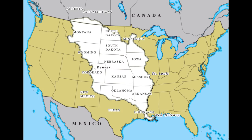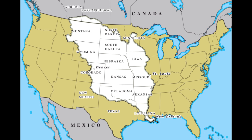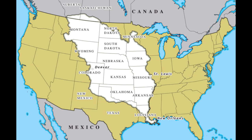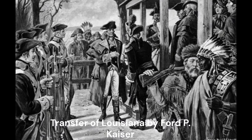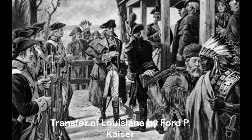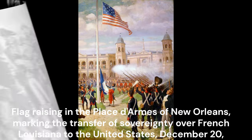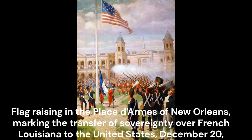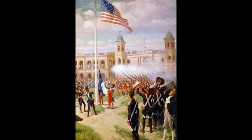As the 19th century dawned, the U.S. expanded westward with the Louisiana Purchase in 1803, doubling its size overnight. This era of manifest destiny saw pioneers, adventurers, and settlers push the nation's borders toward the Pacific. However, the country remained deeply divided over slavery, setting the stage for the bloodiest conflict in its history.